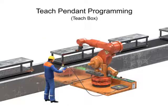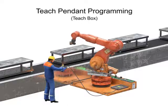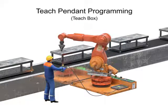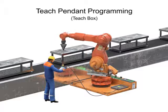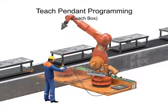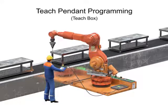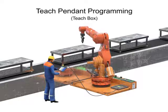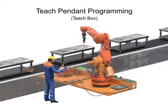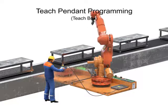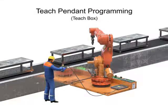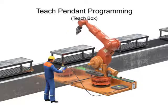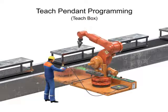Teach pendant programming is a method by which the operator steps the robot through the program point by point while recording the coordinates for each point. The technician has the ability to send the robot to a desired position, inch, or jog to adjust it and then record the point. The technician may also change the speed, since a low speed is usually required for careful positioning or while test running through a new or modified routine. ANSI standards recommend a speed of no more than 10 inches per second when programming.